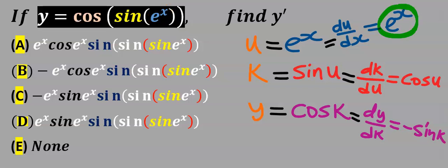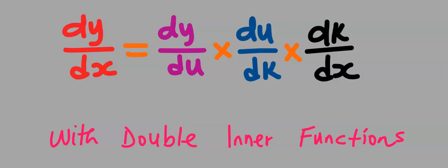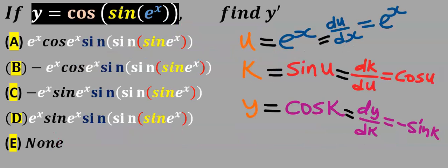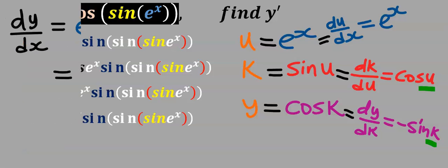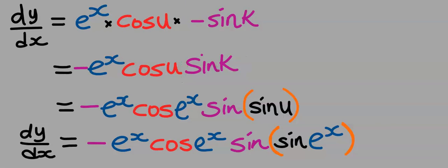Next we're going to multiply our results according to chain rule with double inner functions. Remember to replace the u and the k in the final result. After multiplying the results and substituting for u and for k, this is our dy/dx.